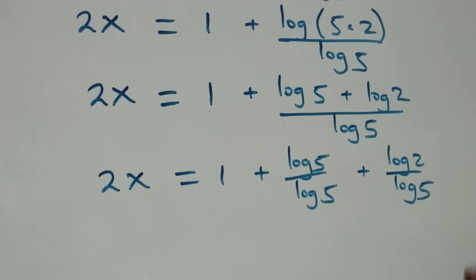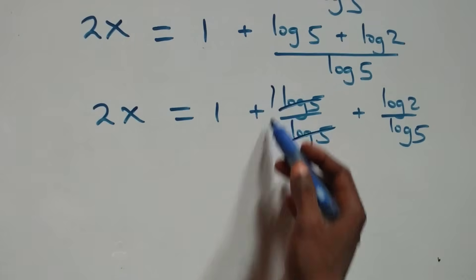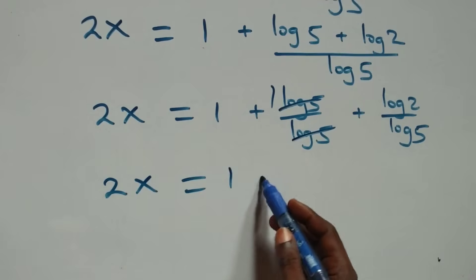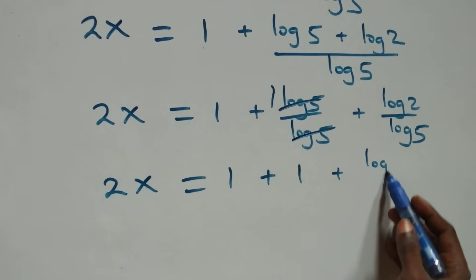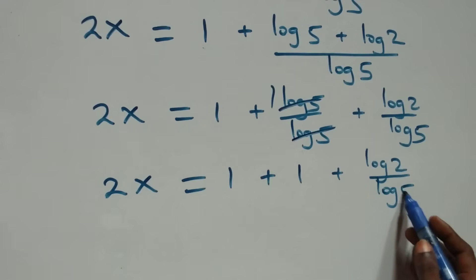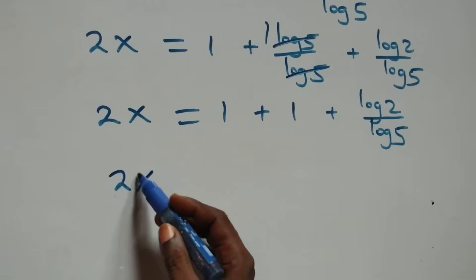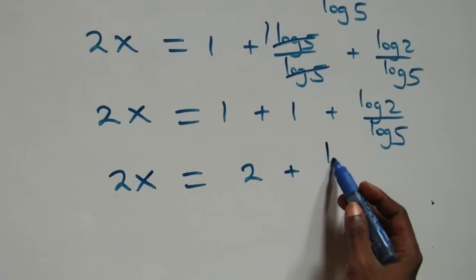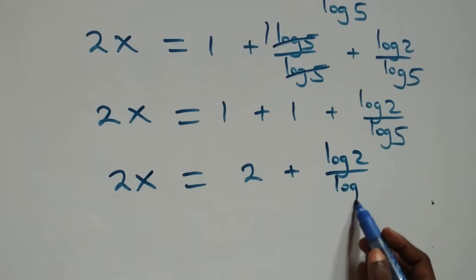Which implies here: log 5 cancels with each other, leaving 1. That is, 2x equals to 1 plus 1, plus log 2 over log 5. Then next step: we have 2x equals to 2, plus log 2 over log 5.